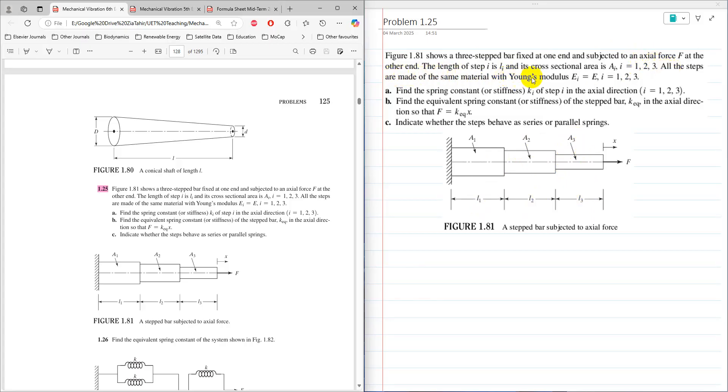All steps are made of the same material, so it means that E1, E2, and E3 are equal to E. For part A, find the spring constant or stiffness Ki of step i in axial direction.